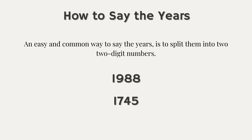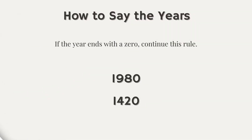Now let me give you some tips for pronouncing other years when you're talking about the past or maybe the future. An easy and common way to say the years is to split them into two two-digit numbers. For example: 1988, 1745. If the year ends with a zero, continue this rule: 1980, 1440.